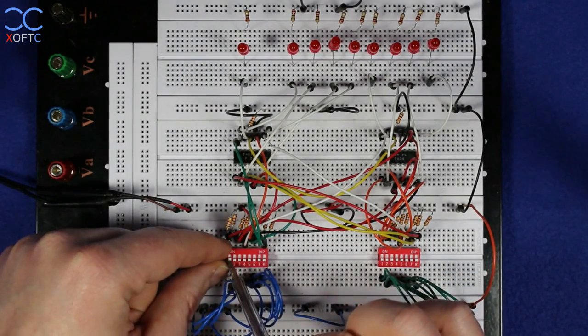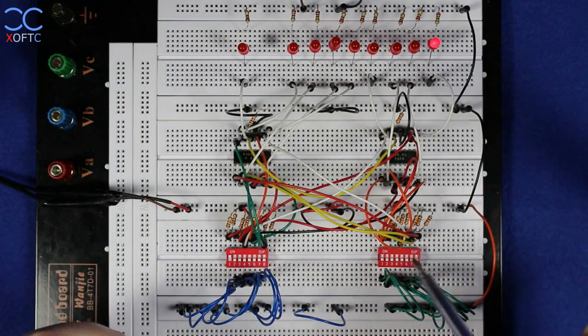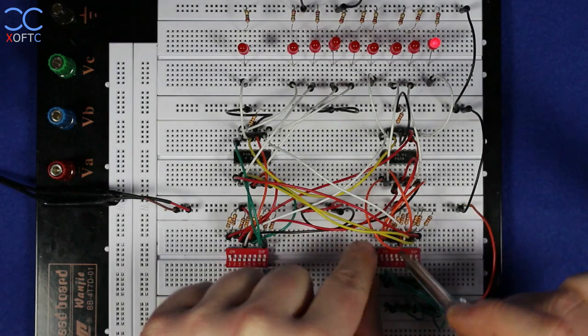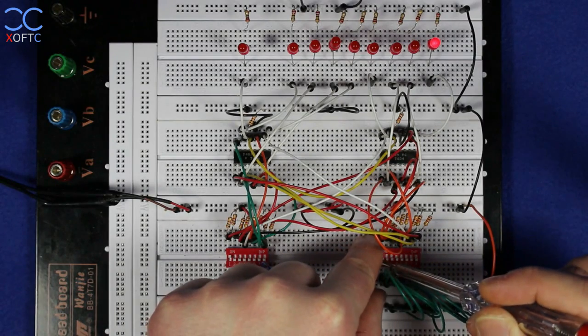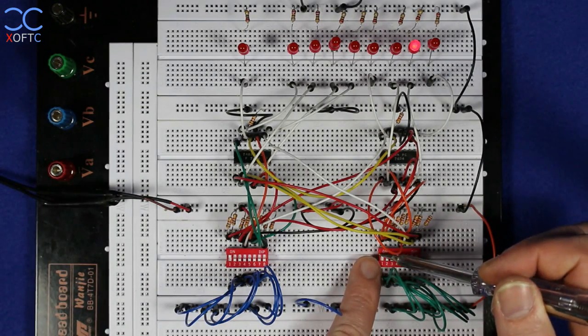If I set A to one, we can already see that we have one because B is zero. And if I set B to one as well and we're adding one plus one, we get two.